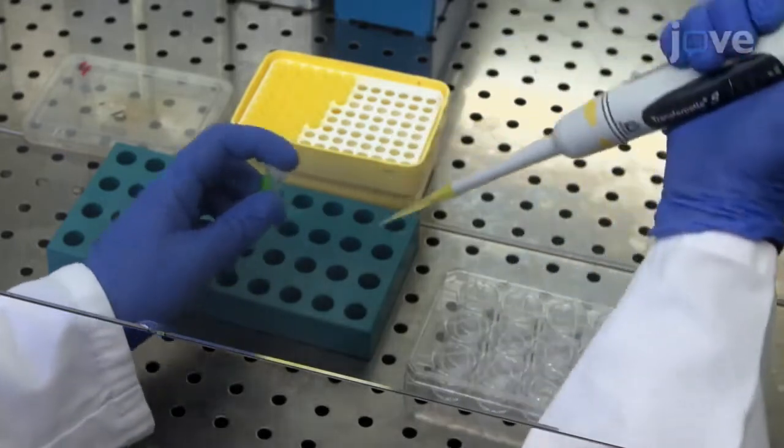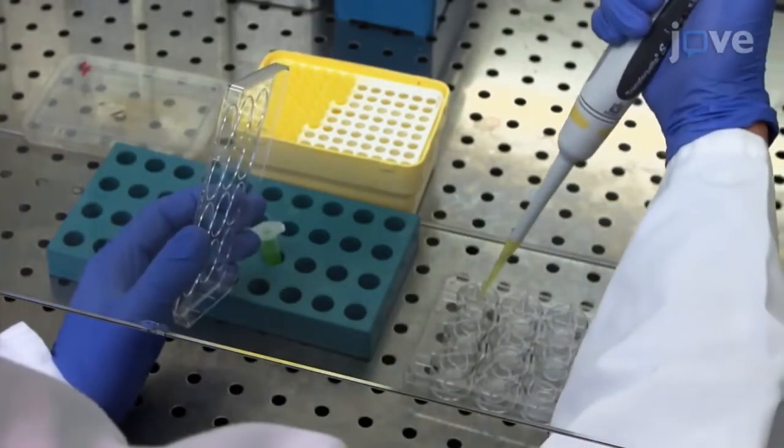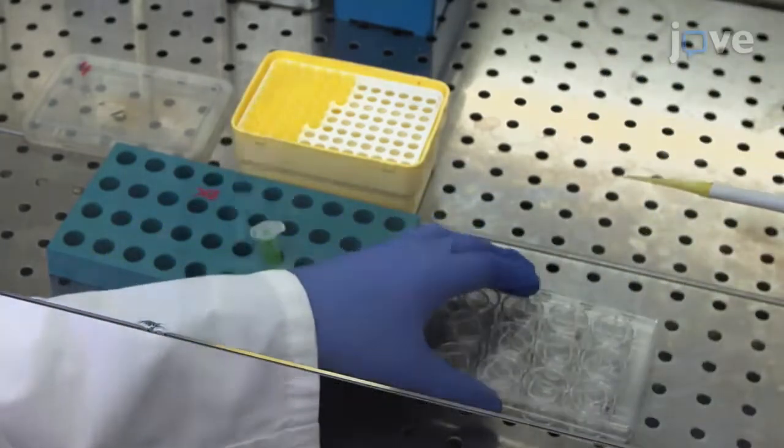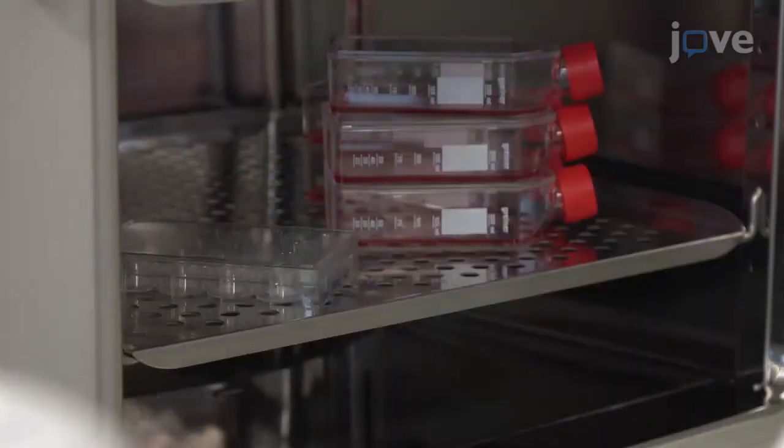Coat the porous membrane of each insert with 90 microliters of 10 micrograms per microliter collagen 4 and fibronectin mixture and incubate the plate in a cell culture incubator at 37 degrees Celsius for 24 hours.